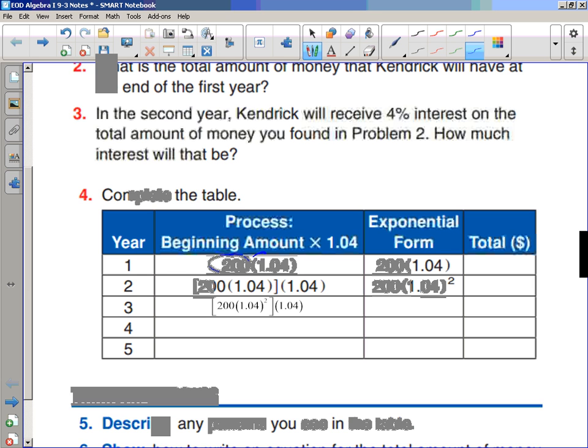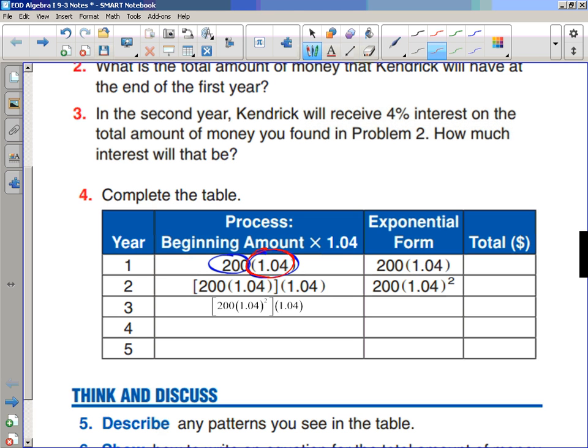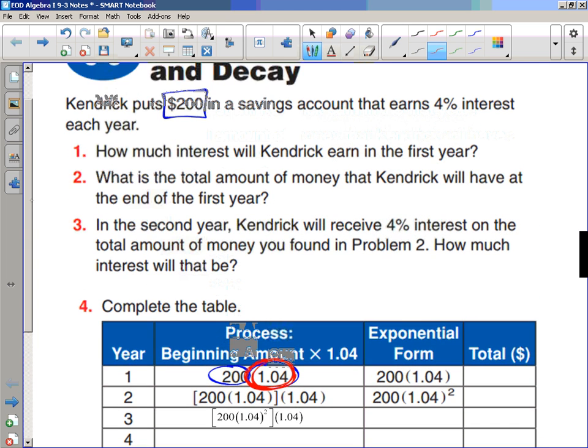So think for a second, where is this $200 coming from? Hopefully you'll say that's the $200 that Kendrick has put in his savings account. Now look at this $1.04. Where do you think that comes from? Well, that comes from this right here, 4% interest. But when we're earning 4% interest, it's not going to be times 4. Remember, when we're taking a percent and turning it into a decimal, we take the number that has a decimal right after it, and we move it to the left two places. So that would mean it would be .04.